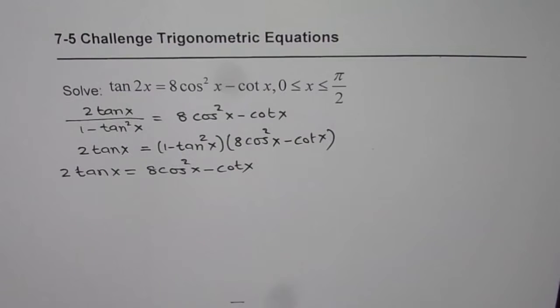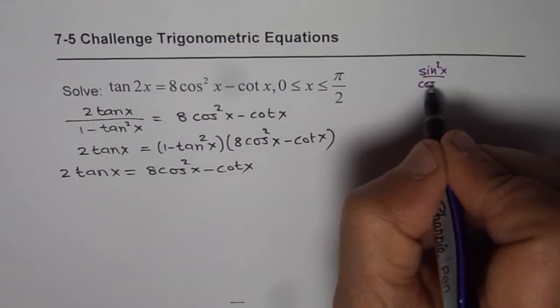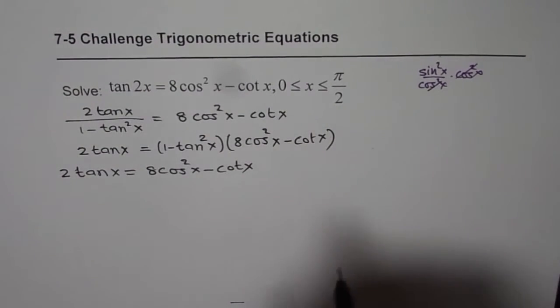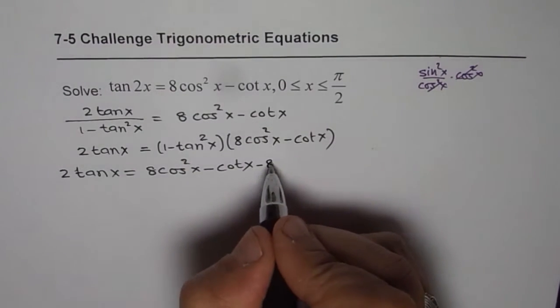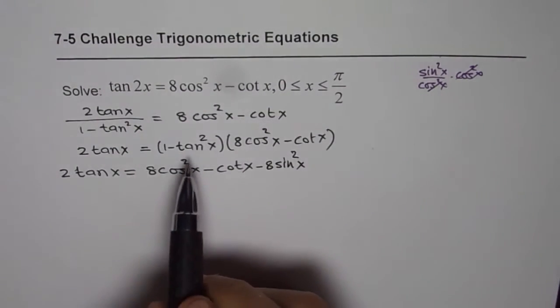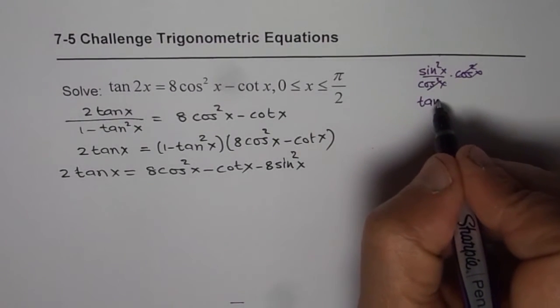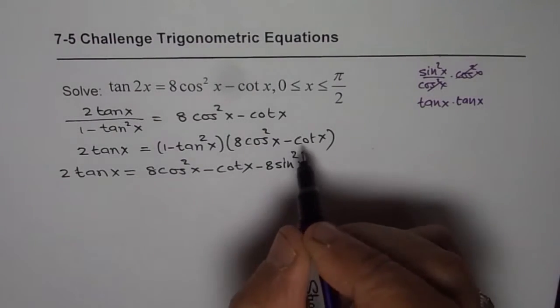Now tan is sine x over cos x. Let me show you: tan is sine square x over cos square x. When you multiply by cos square x they get cancelled, so you get sine square x. When you multiply with this you get minus 8 sin square x. The next term is multiplying tan square x with cot x. Let me show you that also. Tan square x can be written as tan x times tan x.